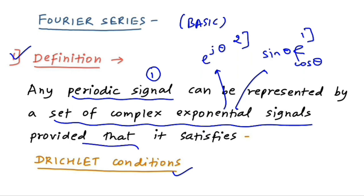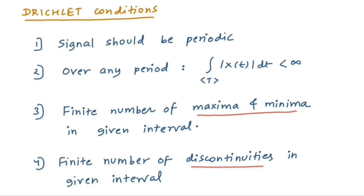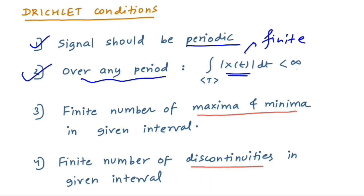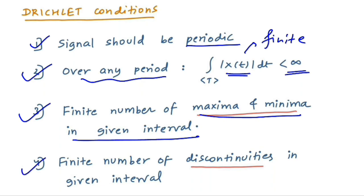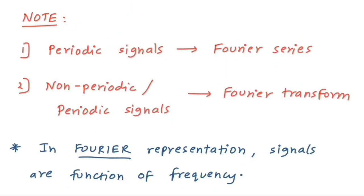There are four Dirichlet conditions. First, the signal must be periodic. Second, if you integrate the signal over a given time period, the answer must be a finite value — less than infinity; if it equals infinity, you cannot apply Fourier series. Third, there must be a finite number of maxima and minima in the given interval. Fourth, there must be a finite number of discontinuities in the given interval. All four conditions must be satisfied.